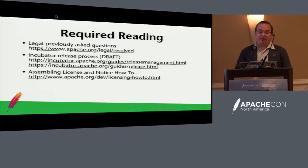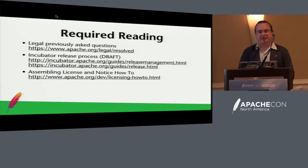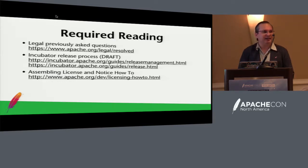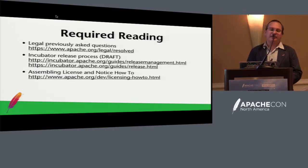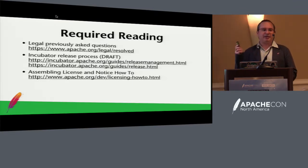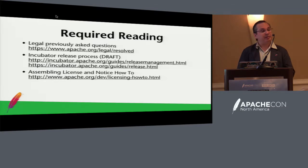If you need help with dependencies and licensing, look at the legal previously asked questions — that gets updated on a regular basis. There is an incubator release process document which is continually updated and has a lot of very good information. Probably the best one to look at in terms of getting your license and notice together is the licensing how-to. Please read these; they will answer most of your questions. If you're unclear about anything in this documentation, please send an email to the incubator list.